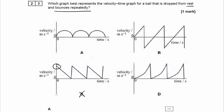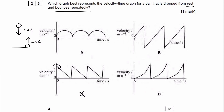So it's either A, B, or D. The quickest way to get to the answer is to think about the fact that the ball bounces repeatedly, which means it goes up and down, up and down. When the ball is going downwards, let's say that's the positive direction, so there is a positive velocity. When the ball bounces and goes upwards, there will be a negative velocity. Because the ball is continuously going up and down, the velocity is continuously switching between positive and negative, and therefore the only graph which has positive and negative velocity is B.